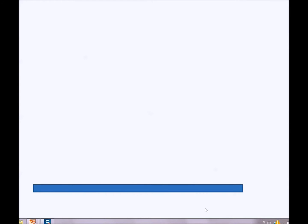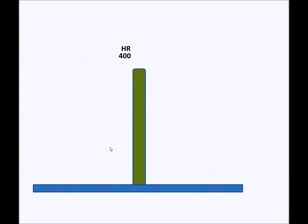In this short video I will introduce the principle of human capital production function. Let's analyze an example company of 400 employees. This 400 is staff size at full-time equivalent, so each employee is paid according to the theoretical working time, in this case 2000 hours per year.